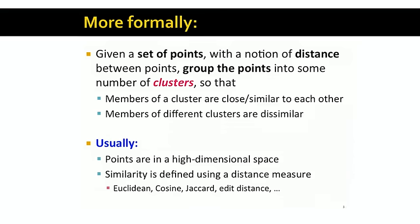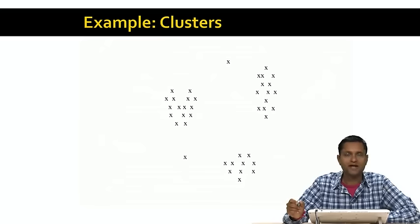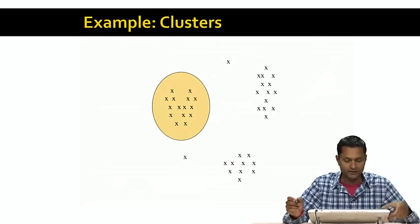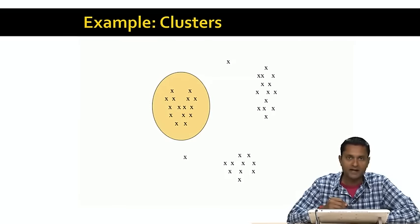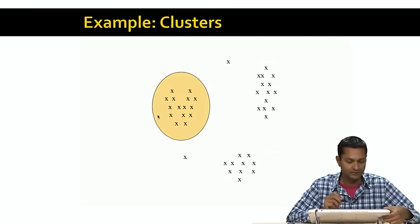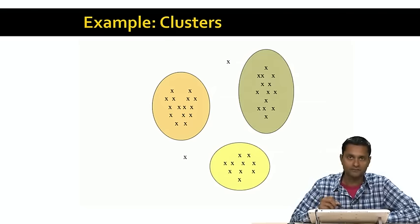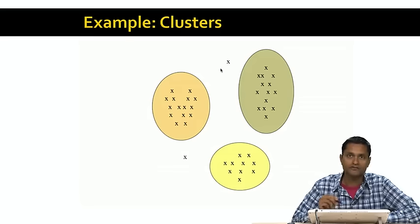Going back to our example, here we have points in a two dimensional space, and let's say our distance measure is Euclidean. Points in the highlighted group are close to each other by Euclidean distance, and are closer to each other than they are to points outside this group — we'll call this group a cluster. Similarly, we have two more clusters based on the same notion. And finally, we have two outliers that are not close to any of the clusters.